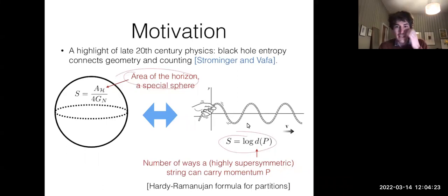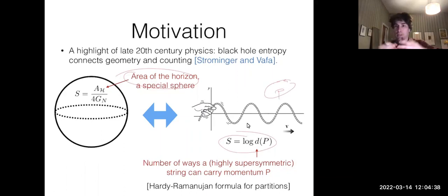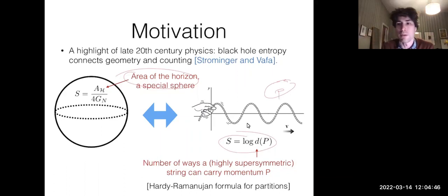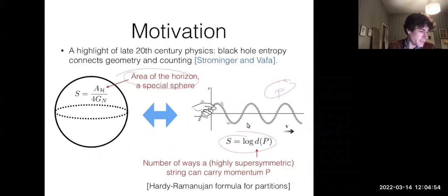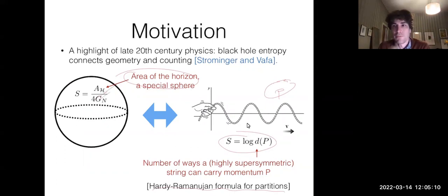This entails that there's a geometrical quantity — an area of a certain solution — that is matched by an entropy, which means a logarithm of some number of states. The number of states that matched: in essence, you imagine a string carrying some momentum p chirally along some direction and ask how many ways can you distribute this momentum p among different quanta. The number of ways is a number of partitions of that momentum, given by the Hardy-Ramanujan formula, which gives the asymptotic behavior. The charge p of the black hole plugged into that formula gives you the area. This is the canonical example of microscopic counting telling us about a geometric quantity.